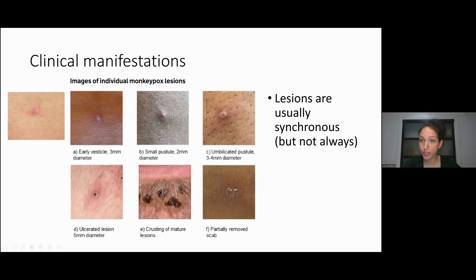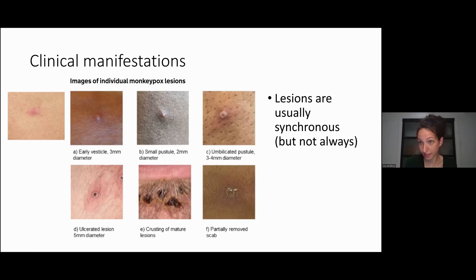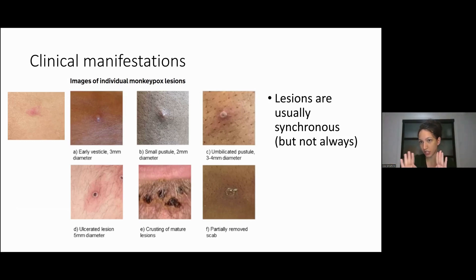The lesions are said to be synchronous, meaning they're all in the same phase of evolution at the same time within one area, since they don't all appear simultaneously across the body. The ones that appeared at the same time in one area will generally be in the same phase of evolution. Lesions that progress to other areas won't necessarily be in the same stage as the original area, but lesions next to each other on the trunk, for instance, will be in the same stage as each other.